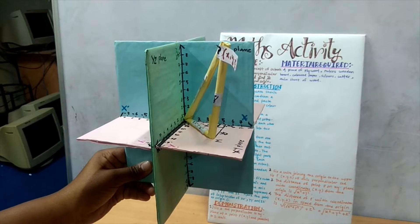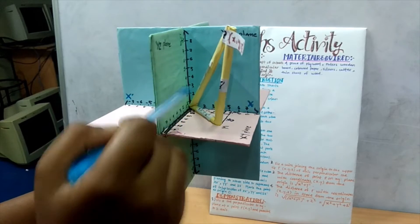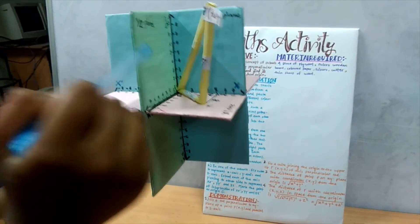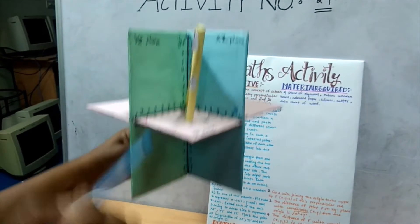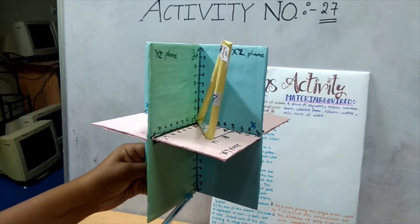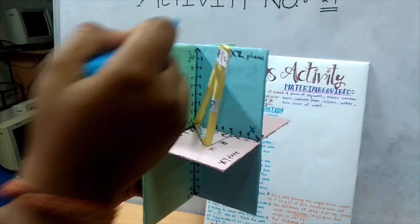These three planes intersect along the line XO X dash, YO Y dash, and ZO Z dash are called X axis, Y axis, and Z axis.